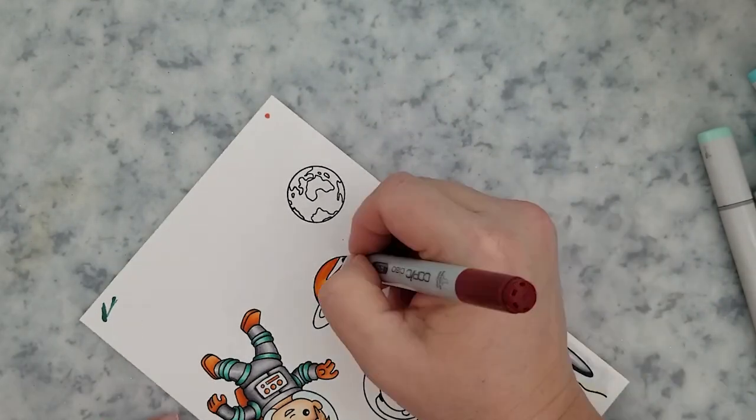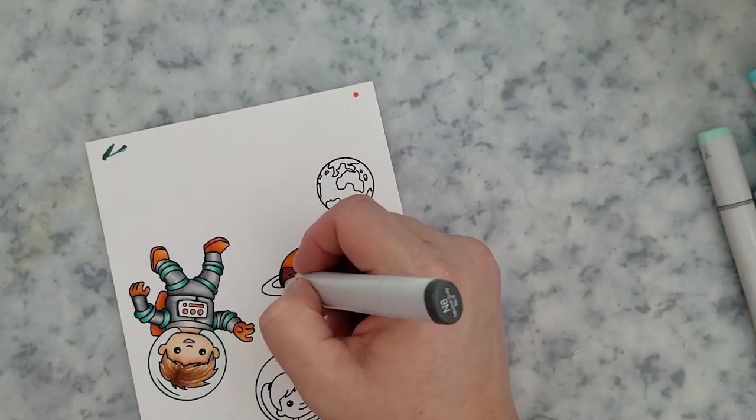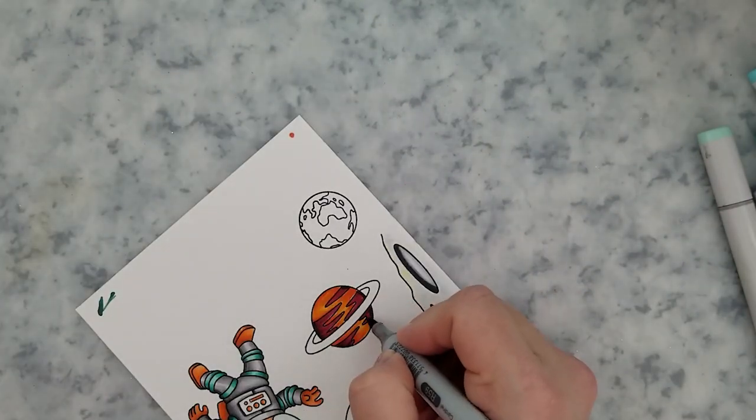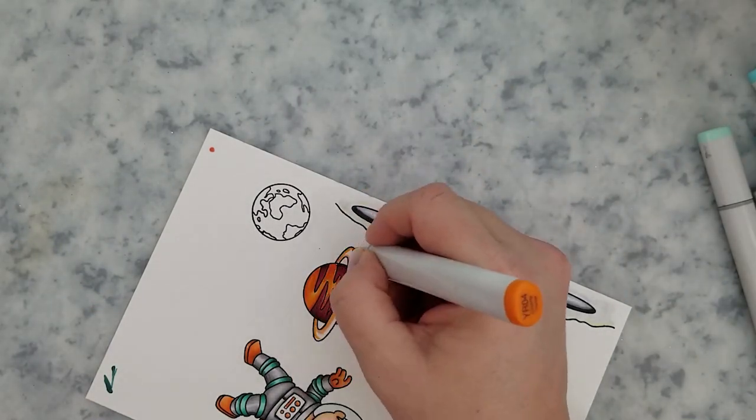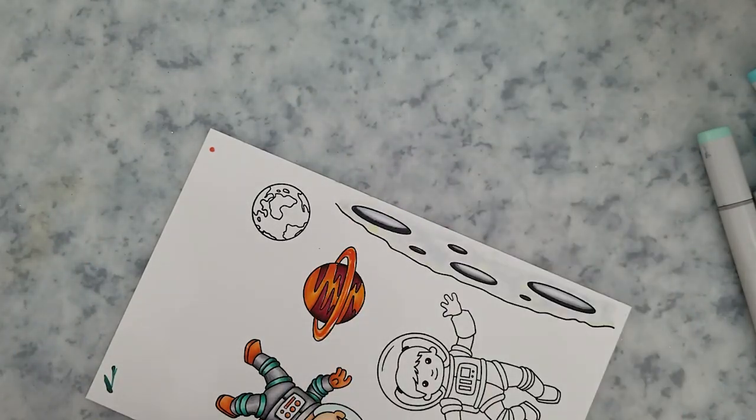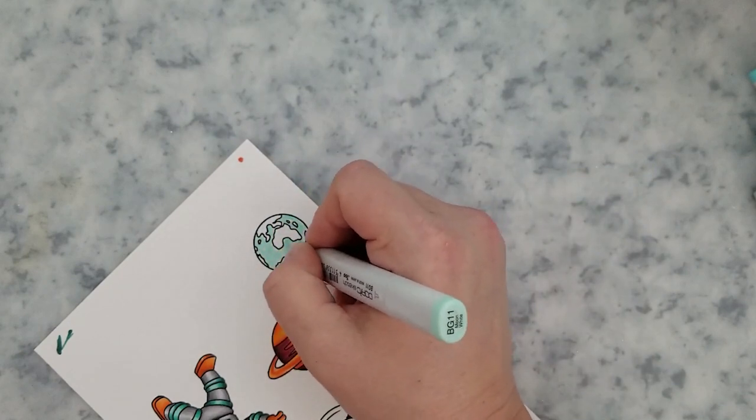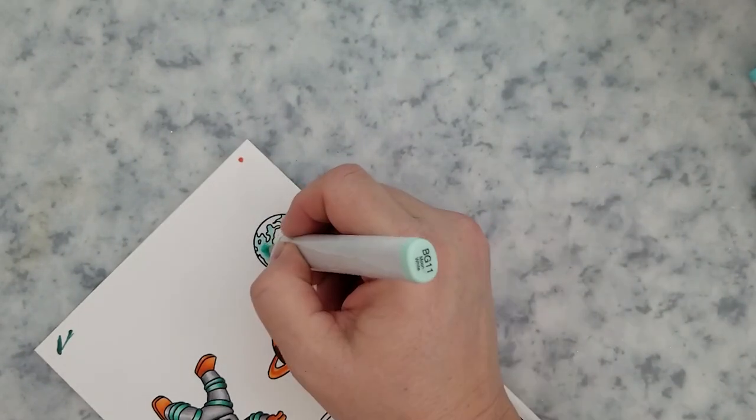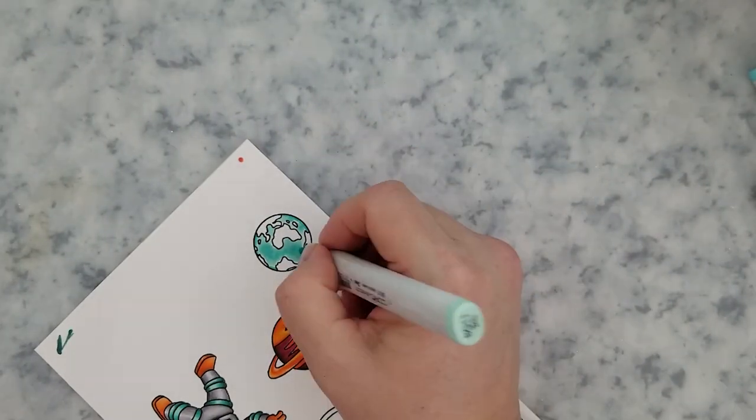So for the planets, I kept them very simple with some orange and reds for my Saturn. I feel like the Saturn and the earth are just something that you go with your own colors, but I did use the YR68 and I used R59 and R29.